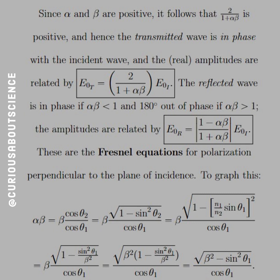We have the reflection coefficient or the amplitude as a function of some coefficient times the incident amplitude. And the same for the transmission. Since alpha and beta are positive, it follows that 2 over 1 plus alpha beta is positive. And hence, the transmitted wave is in phase with the incident wave. And the real amplitudes are related by, just drop the tildes, because the tilde allowed us to have a complex amplitude with the phase difference. But since they're both positive, we don't have a negative there to flip it, which would flip the sine or cosine. The reflected wave is in phase if alpha beta is less than 1. And 180 degrees out of phase if alpha beta is greater than 1 because then you would have a negative sign in there. Since we want the real part, we see that the amplitudes are related by the absolute value there.